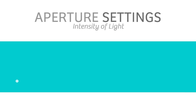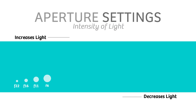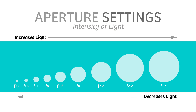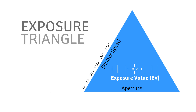Aperture is the intensity of light hitting the sensor, and on the iPhone, the aperture is fixed at f1.8. Shutter Speed is the duration of light hitting the sensor, and on the iPhone, the default shutter speed range is one eight-thousandth of a second to one-third of a second.